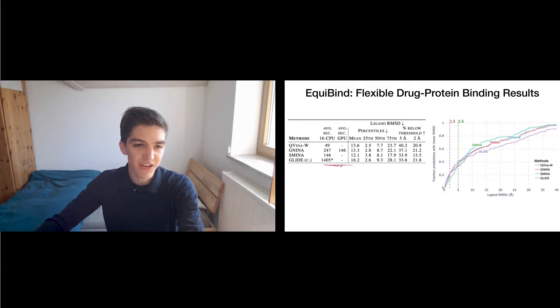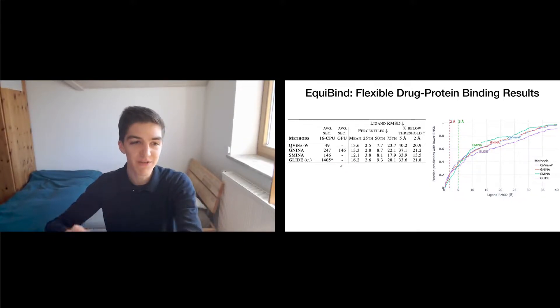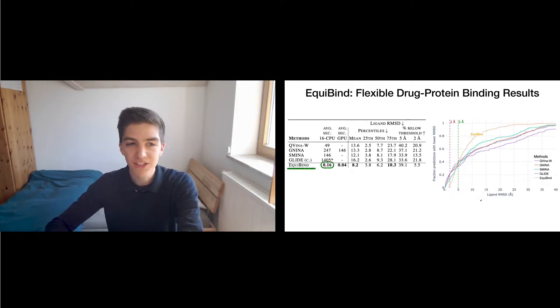Let's first have a look at this section of the table over here. There, we show the number of seconds that it takes on average for a method to make the prediction for a single complex. And we see the time for the baselines here. If we additionally look at the EquiBind number, then we can see we really are magnitudes faster.